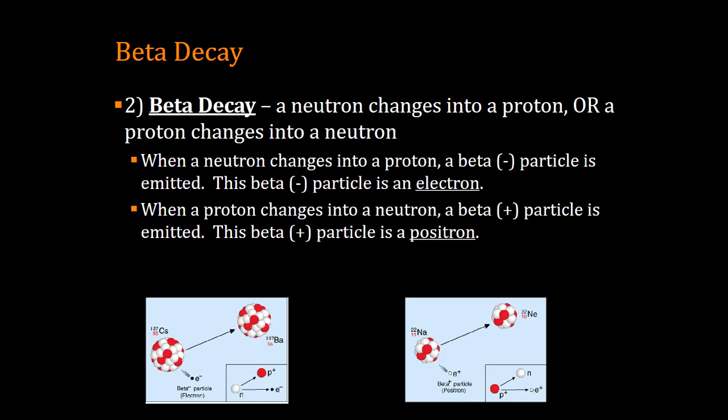So what happens is there's two different things. There's a beta minus particle and there's a beta plus particle. A beta minus particle is a fancy way of saying electron, and it's called a beta minus because it's got a negative charge. Beta plus decay involves a positron, that's the antiparticle of an electron, so it has the same mass, same size as an electron, but it carries a positive charge.